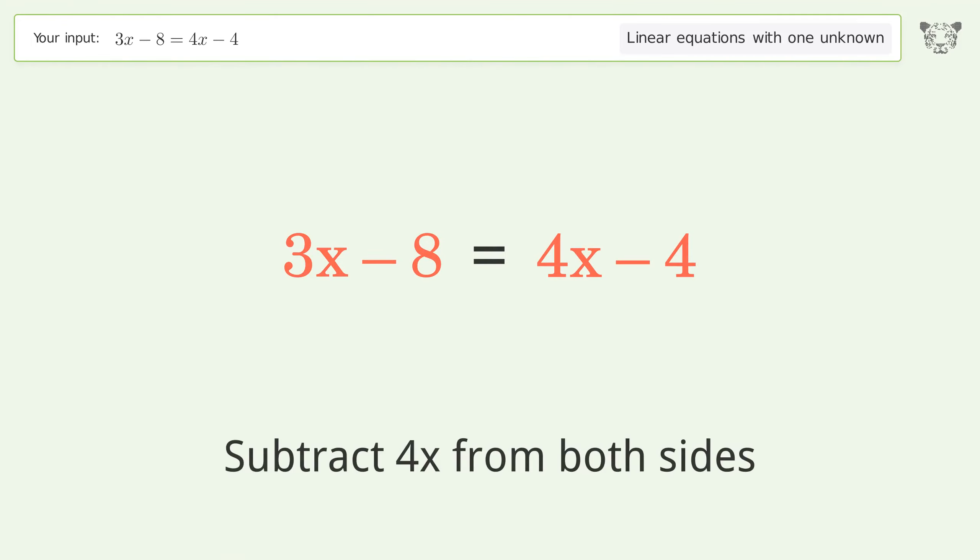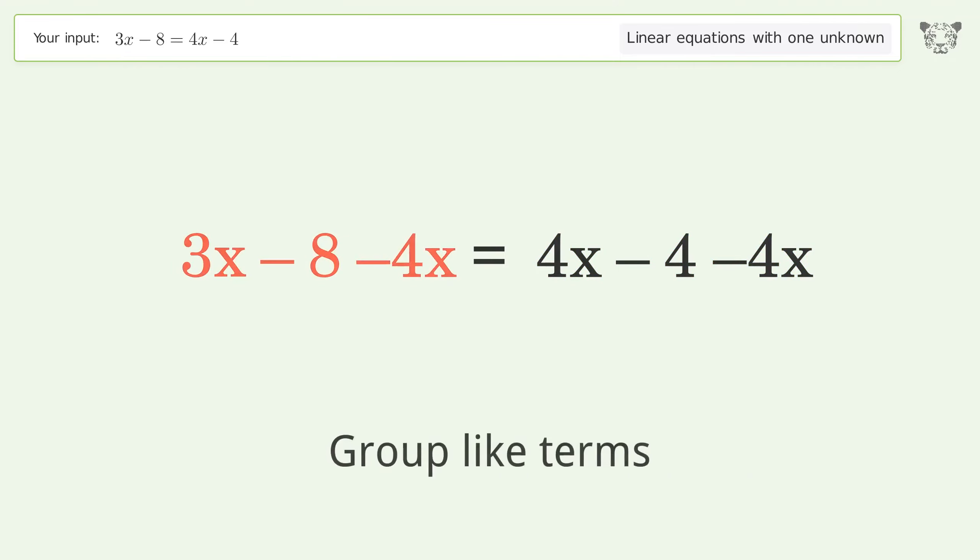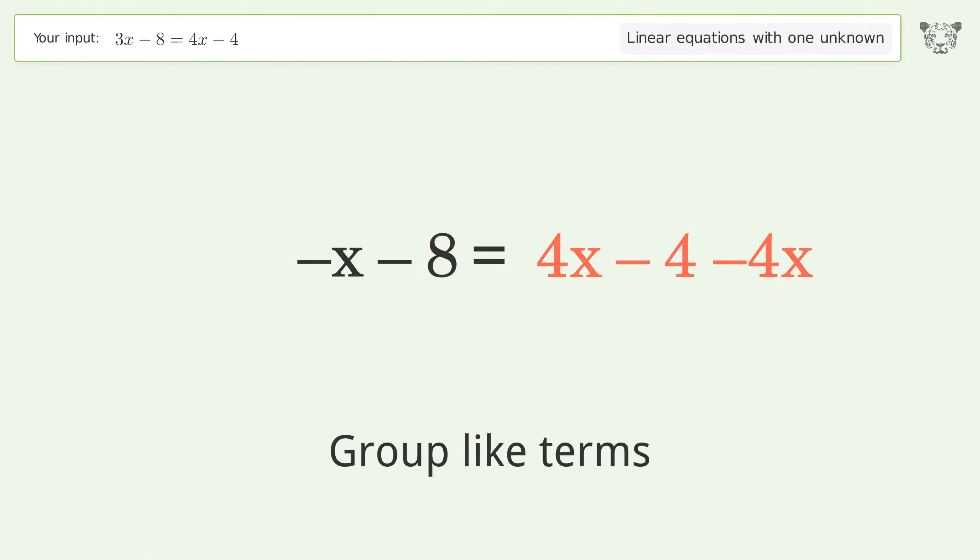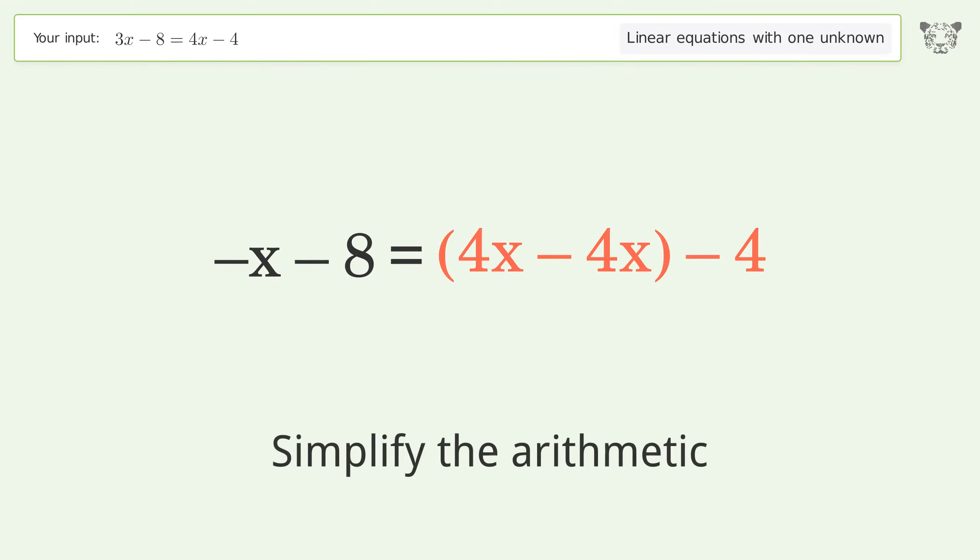Subtract 4x from both sides. Group like terms. Simplify the arithmetic. Group like terms. Simplify the arithmetic.